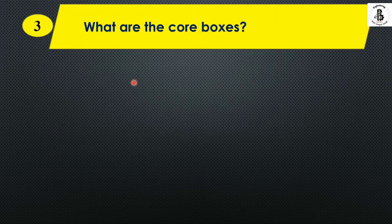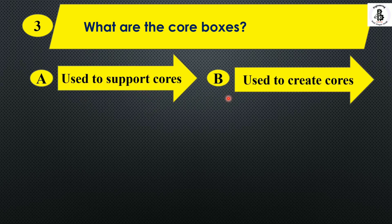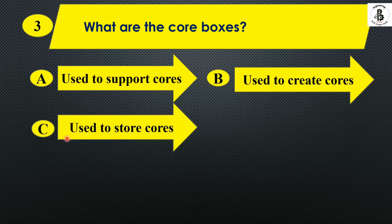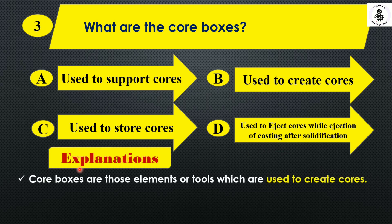Question 3: What are core boxes? Option A: used to support cores. Option B: used to create cores. Option C: used to store cores. Option D: used to eject cores during ejection of casting after solidification. Core boxes are tools which are used to create the cores, so the right answer is Option B.